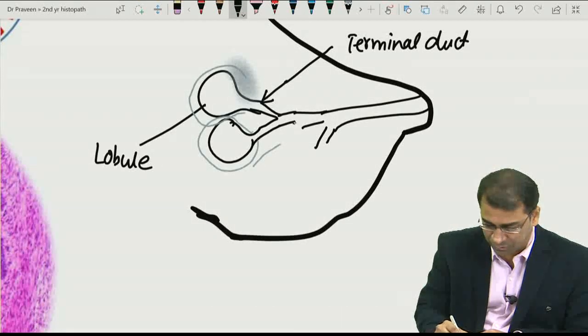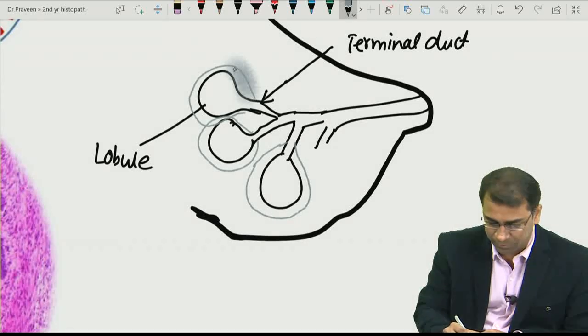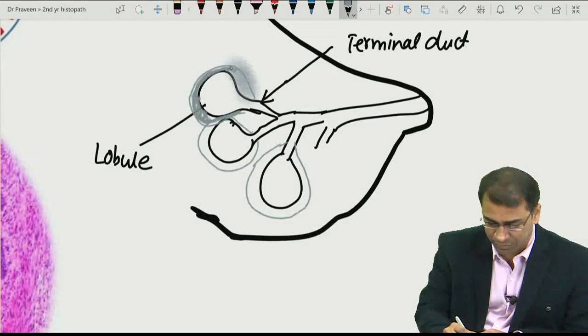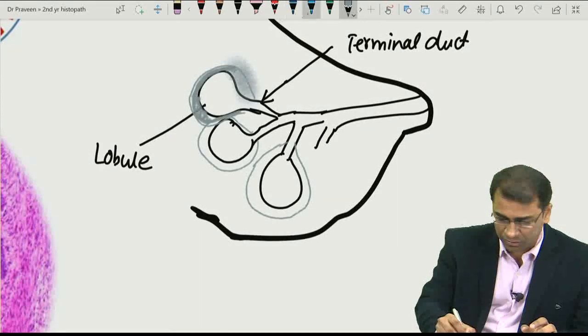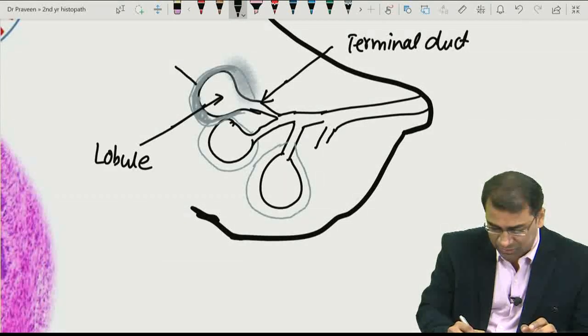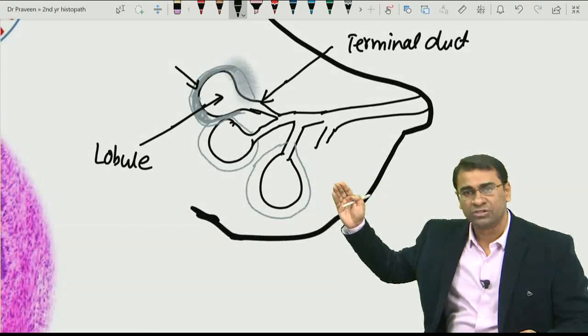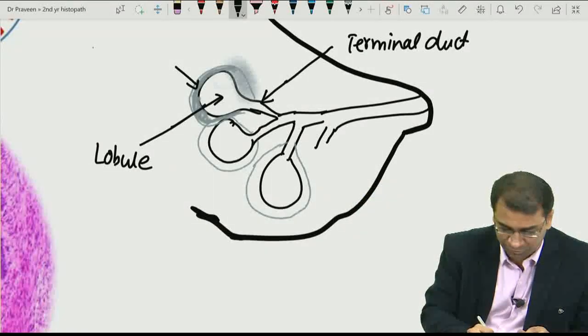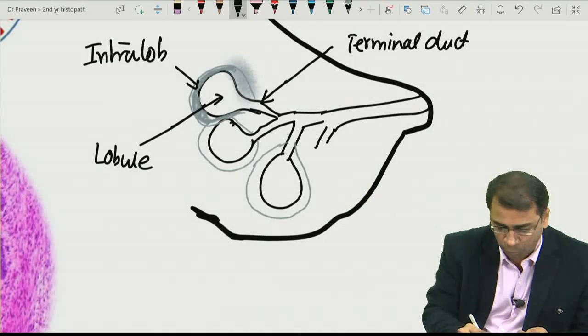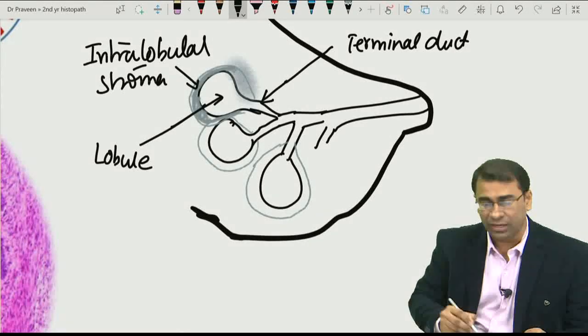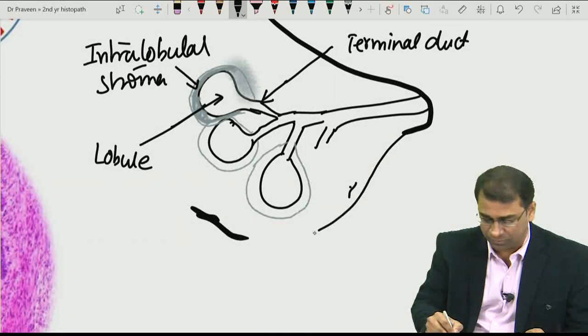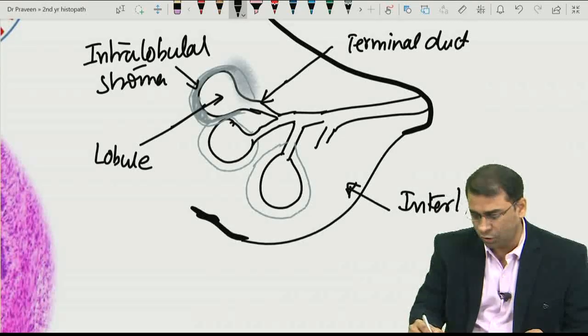So, this is the terminal duct, and around the terminal duct, you will see this grey lobule like this. Now, let us assume, I am just marking this grey colour like this. So, this stroma, I will see here, this stroma, this stroma here. This stroma will be called as intralobular stroma. And this stroma here will be interlobular stroma.